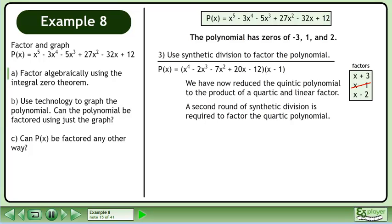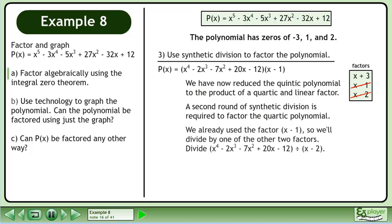A second round of synthetic division is required to factor the quartic polynomial. We already used the factor (x - 1), so we'll divide by one of the other two factors. Divide the quartic polynomial by (x - 2).